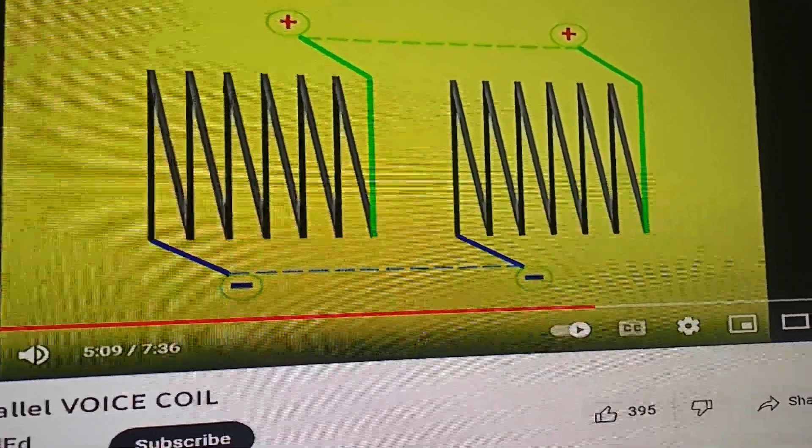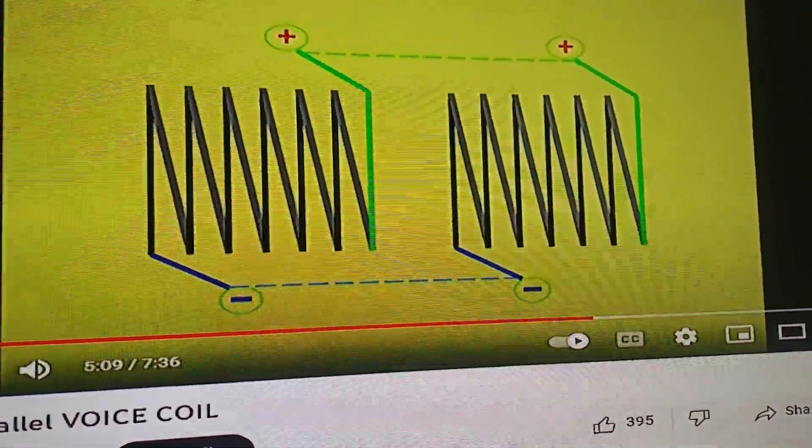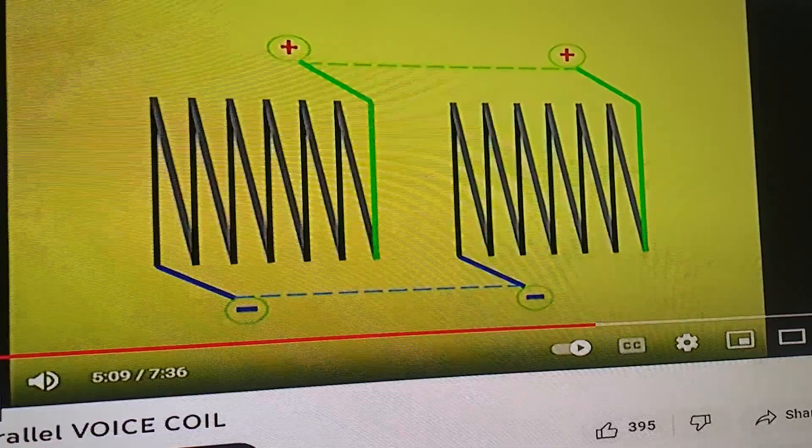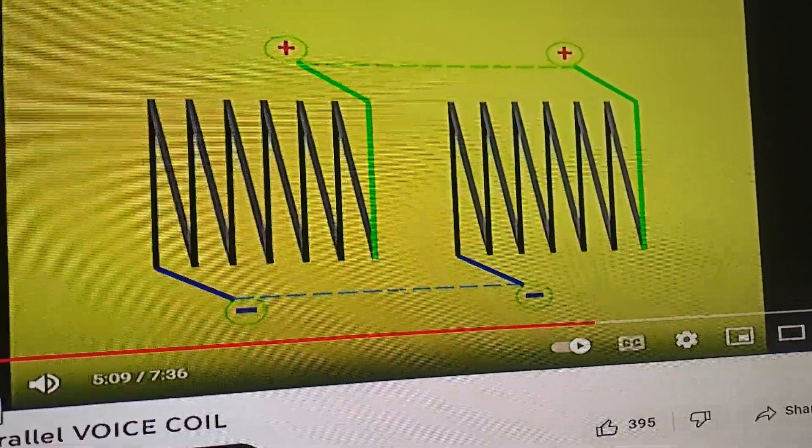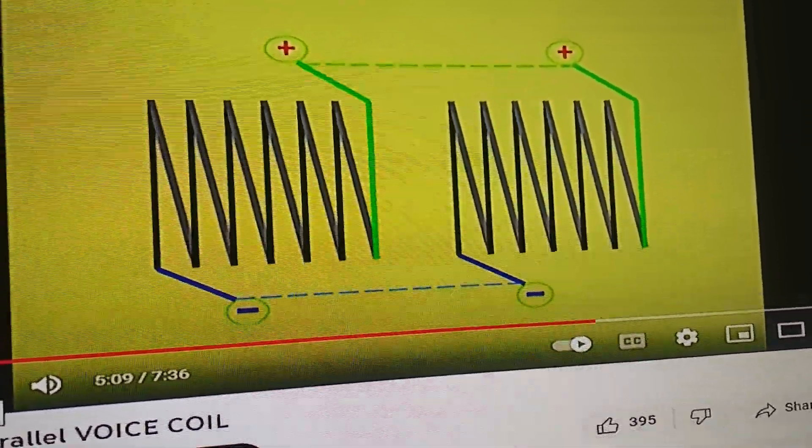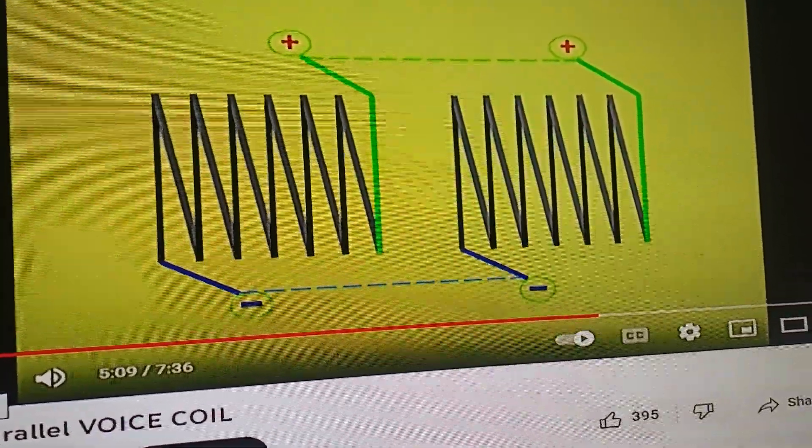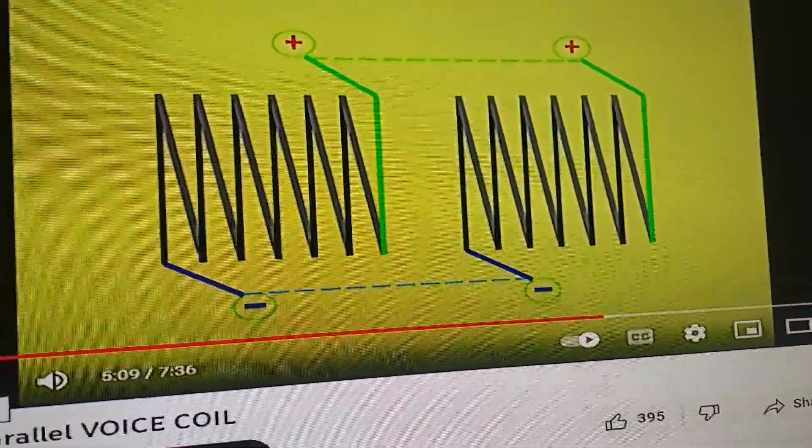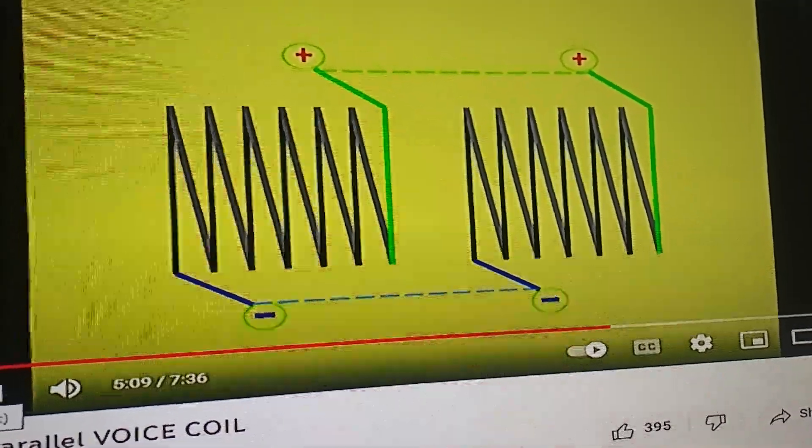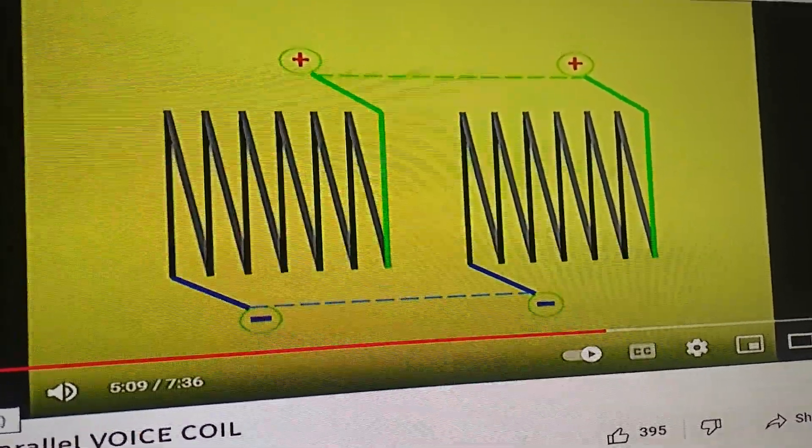The problem is the test needs to be done more accurately. When you drop the impedance like that, you have to make sure that you measure that you're still getting the 2.83 volts, which is roughly equivalent to one watt.